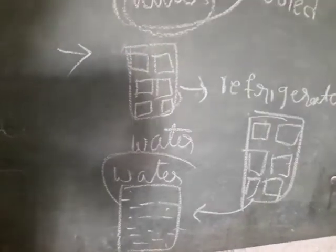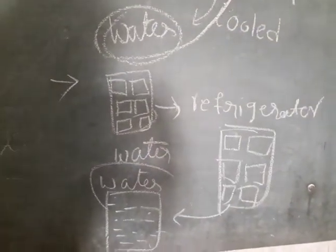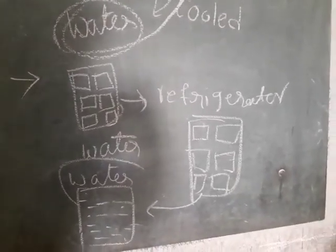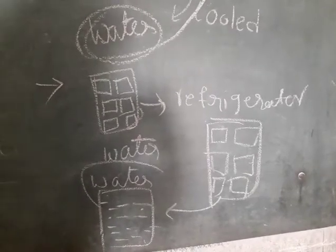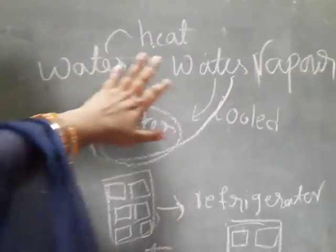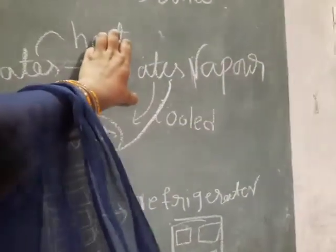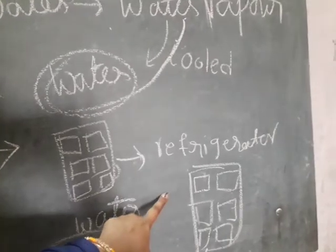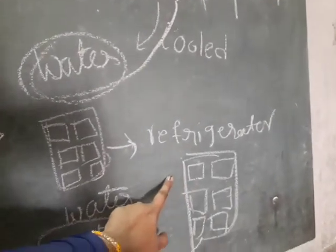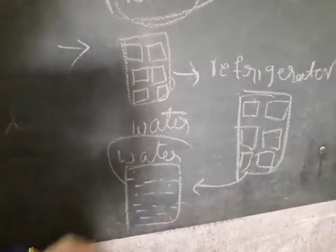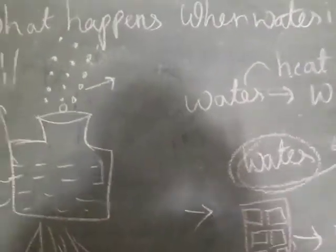Can you understand, children? When we cool water, it changes into ice. When ice melts, it changes back into water. Water keeps changing its form — this cycle of change from one form to another goes on in nature. Now we will learn about the water cycle.